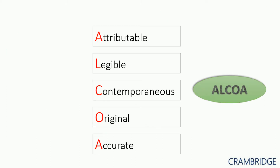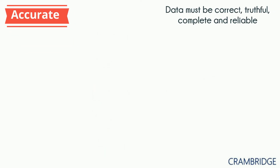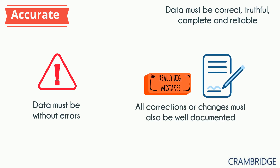The last A in ALCOA is accurate. Data must be correct, truthful, complete, and reliable — it must be without errors. Any corrections or changes made must also be well documented.